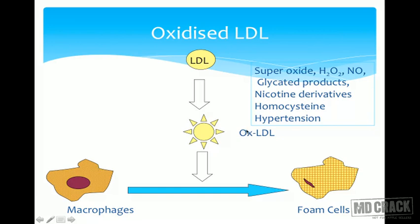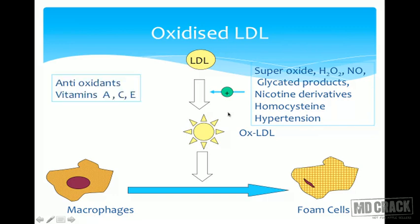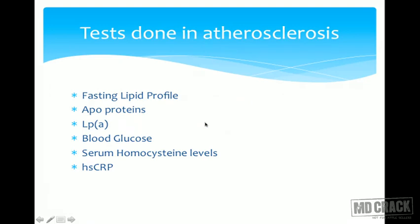Instead of trying to convert foam cells back into macrophages, we should focus on preventing LDL from becoming oxidized LDL. The agents that inhibit this conversion are antioxidants — vitamins E, C, and A — which can help prevent the conversion of LDL to oxidized LDL.